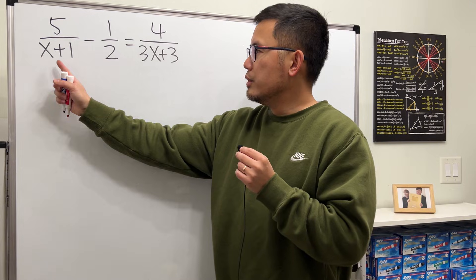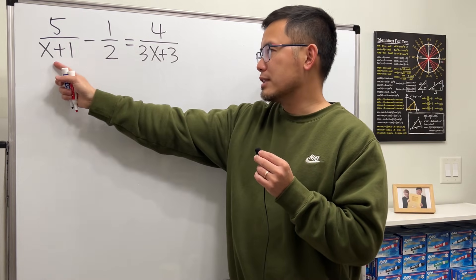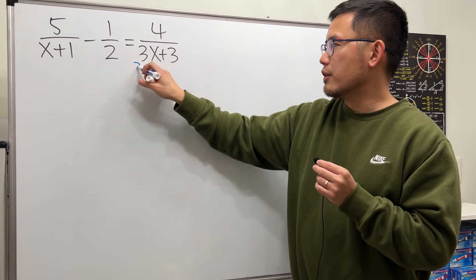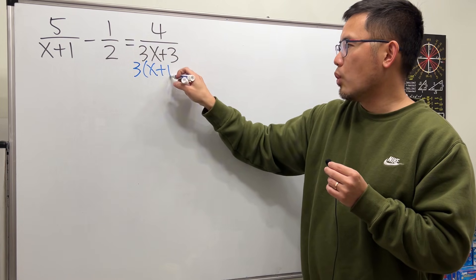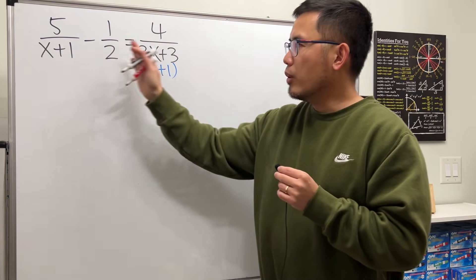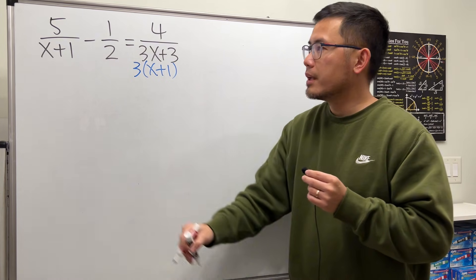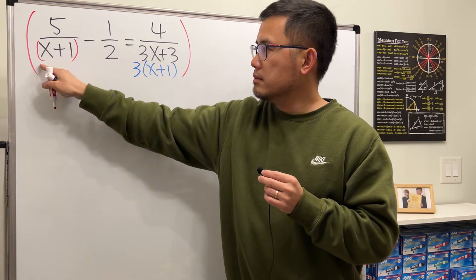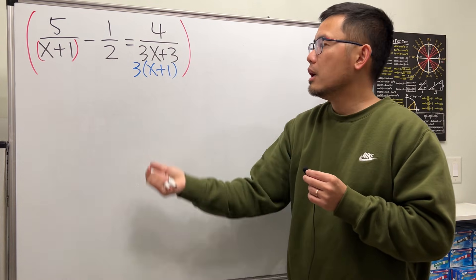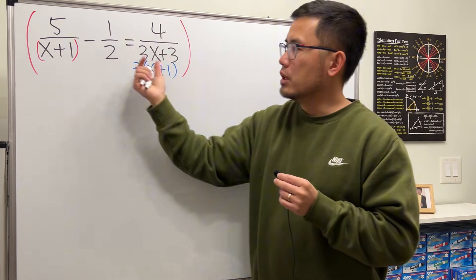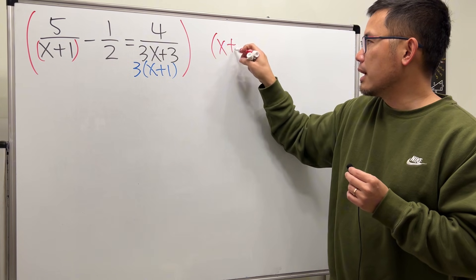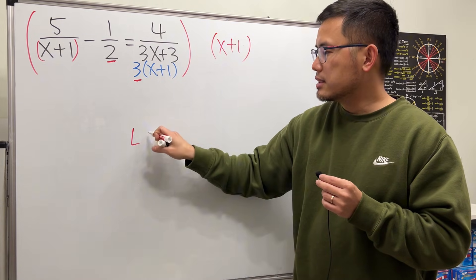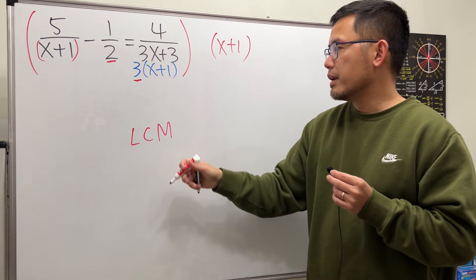Look at the denominators and try to factor them. x plus one cannot be factored. Likewise, two cannot be factored. But three x plus three — we can factor out a three, so factor out the three and we get x plus one. Now we are going to multiply all the terms by the lowest common denominator. We need the x plus one, and then we look at the two and the three to find the least common multiple, which would be six.